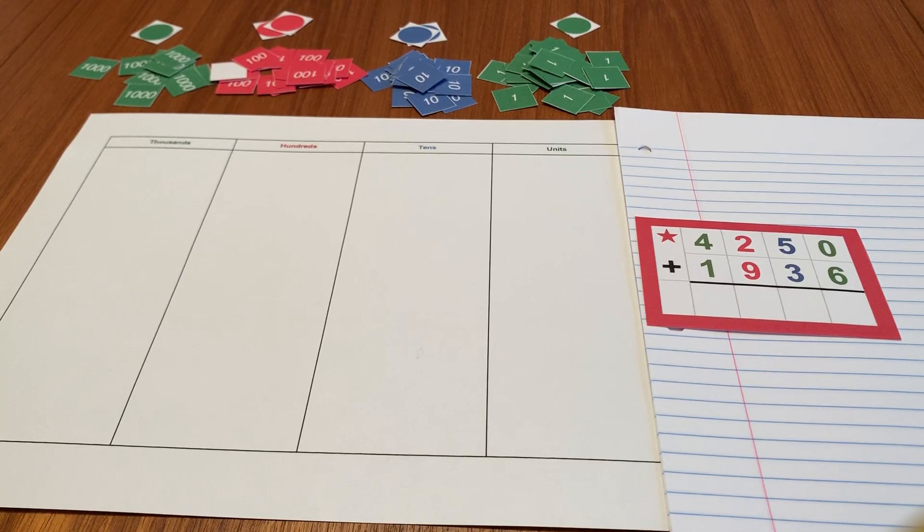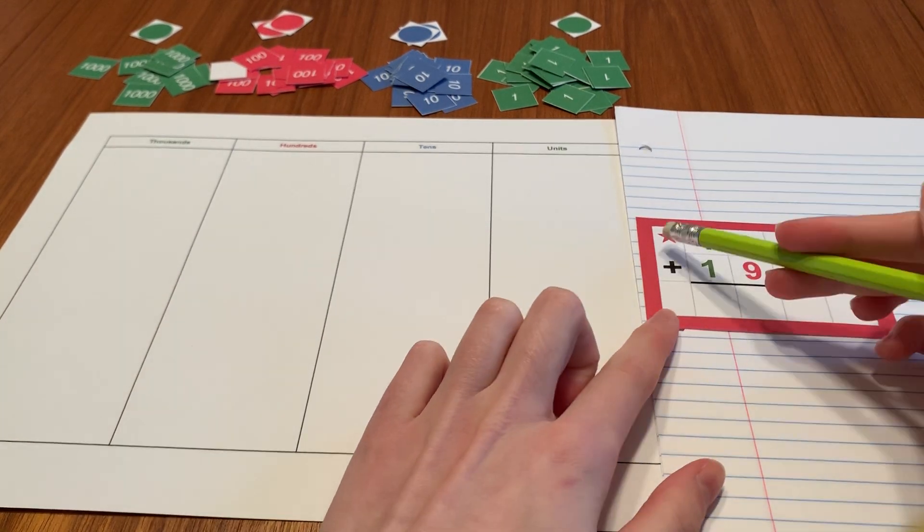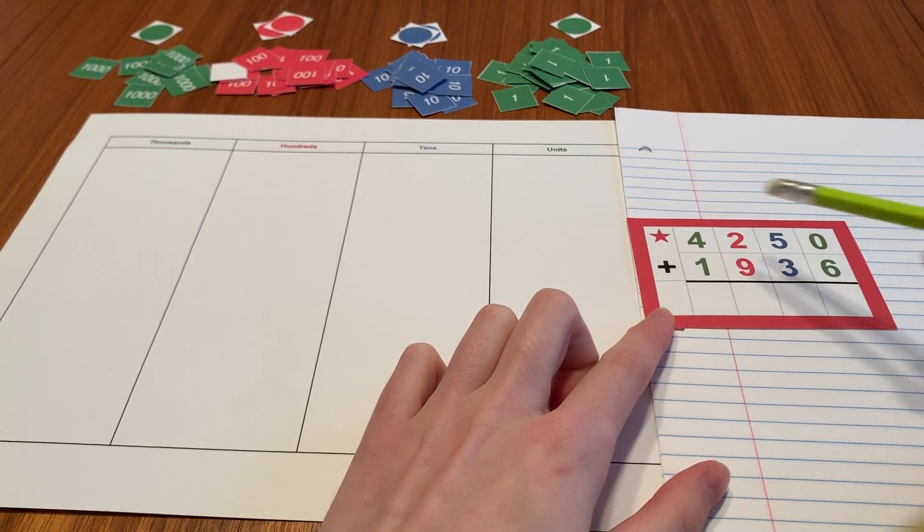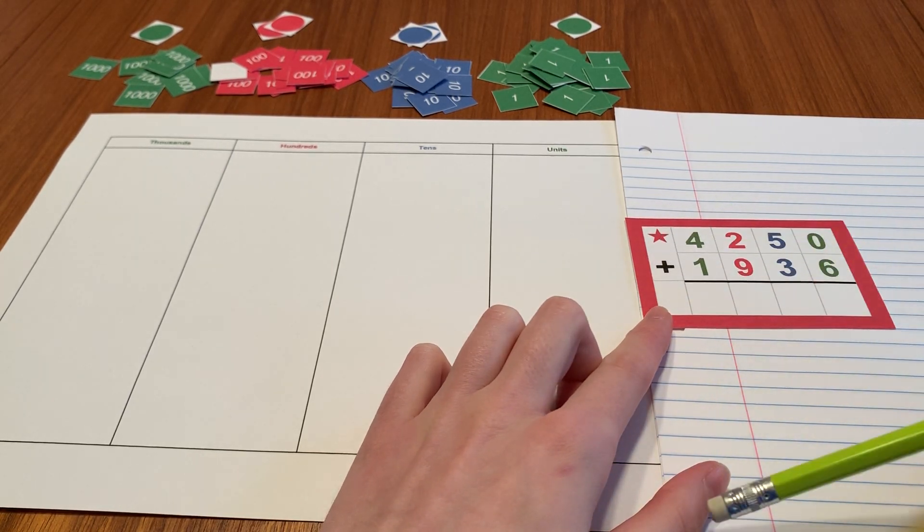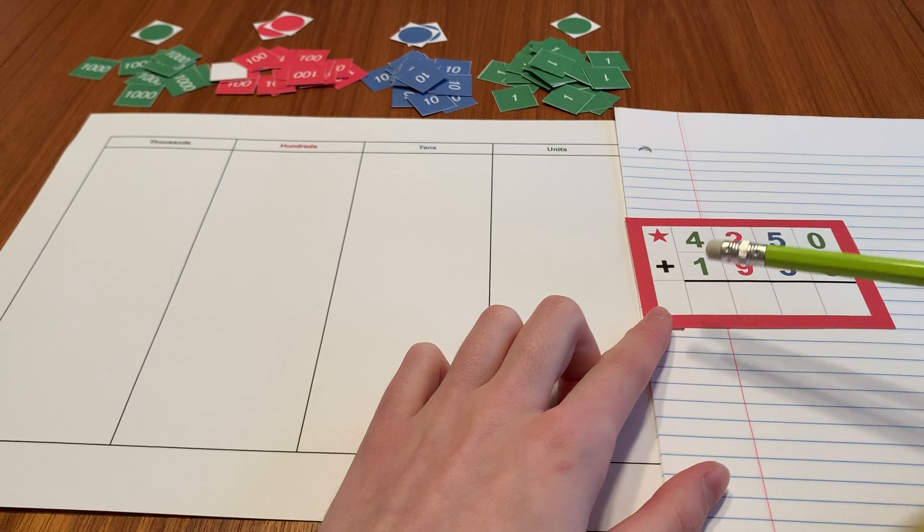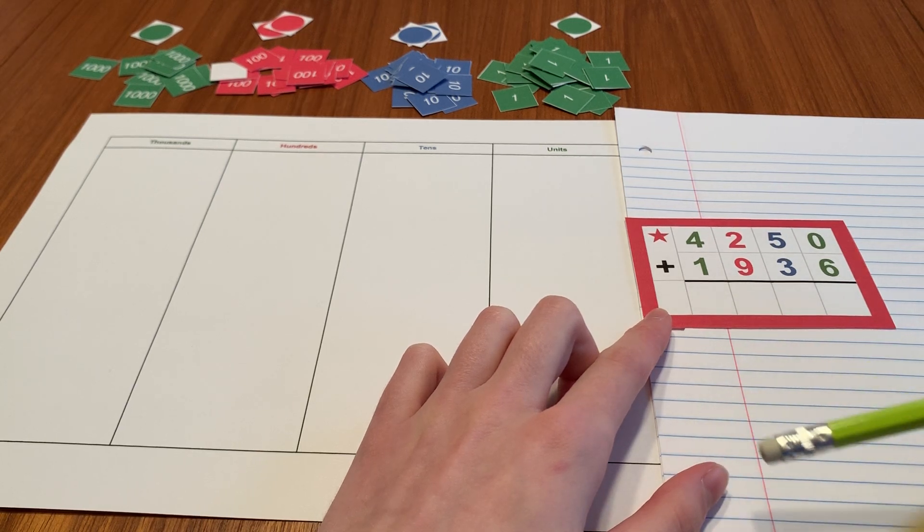This is addition with the stamp game. So this star means that this will be a dynamic addition problem. That means that we're going to regroup or make an exchange.